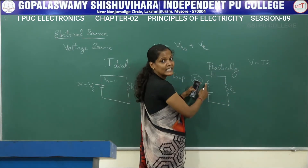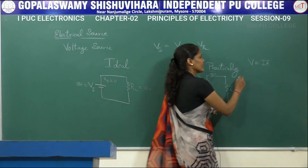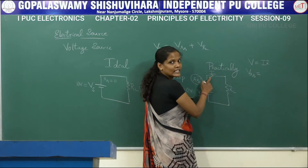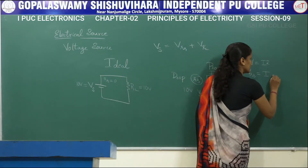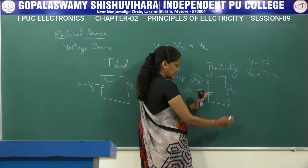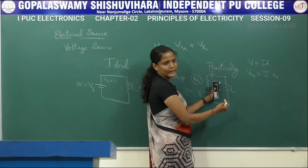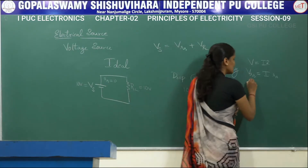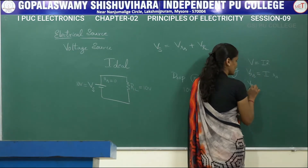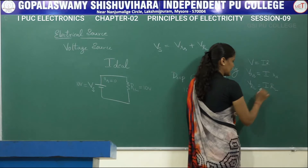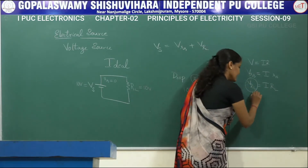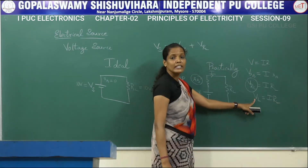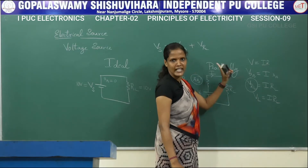The voltage across the internal resistance VRS equals the current flowing through it multiplied by its resistance: VRS = I into Rs. Similarly, the voltage across the load VL equals I into RL, where VL is called the load voltage.